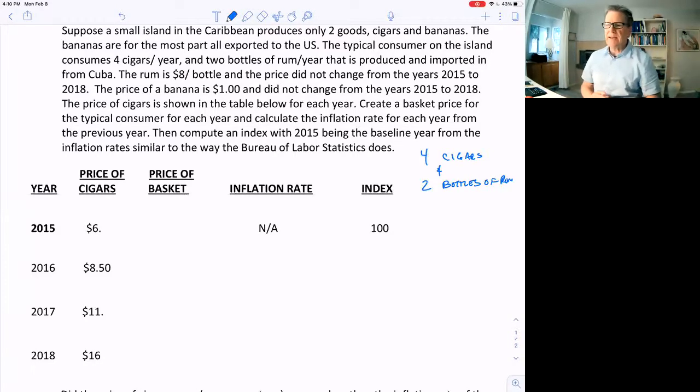So they make bananas, but that's not in the basket because that's not what people typically buy. Those are all exported. The rum is not made there on that island. It's imported from Cuba, but we do include it because that's what people buy.